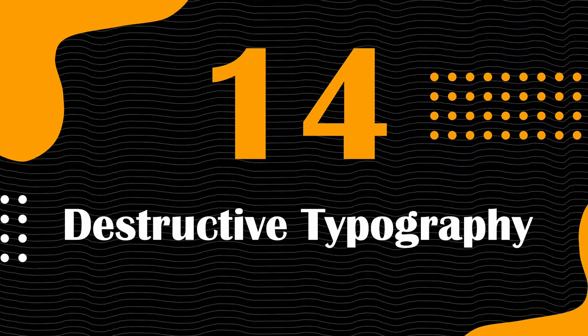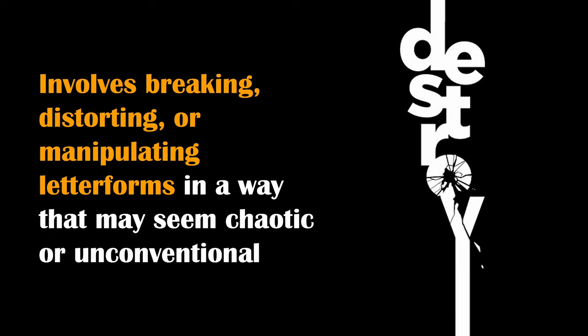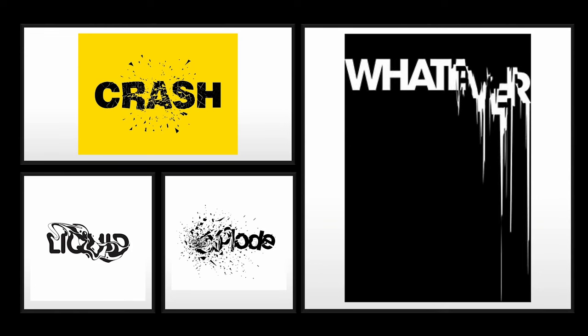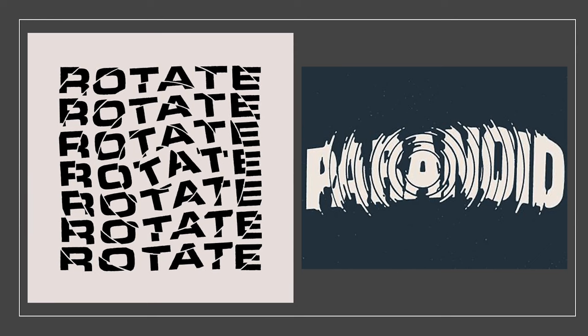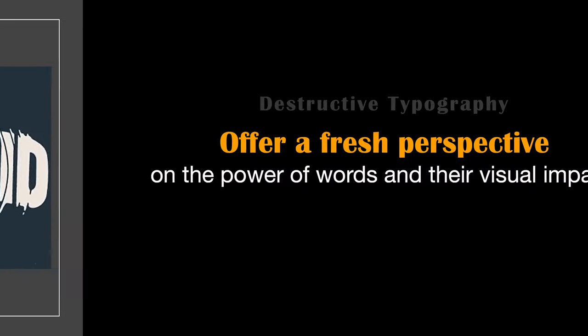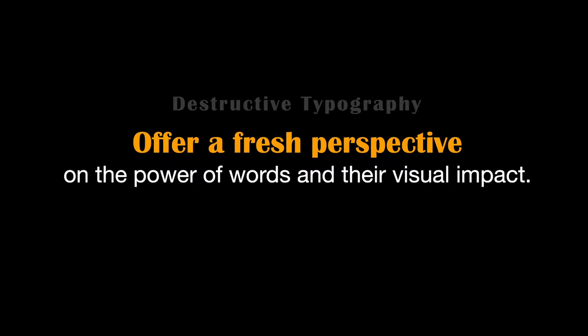Destructive typography is an innovative design trend that challenges the conventions of traditional typography. It involves breaking, distorting, or manipulating letter forms in a way that may seem chaotic or unconventional, but serves a deliberate artistic purpose. This style pushes the boundaries of legibility and invites viewers to engage with text on a more abstract and interpretive level. Destructive typography encourages designers to experiment with negative space, color, texture, and various techniques to create visually striking and thought-provoking typographic compositions.